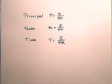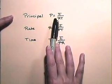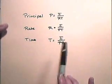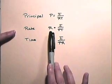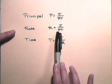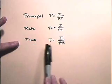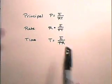Now, let's look at the formulas we will use in this section. Using the basic simple interest formula, we see that the principle, P, equals interest divided by rate times time. We will see that rate, R, equals interest divided by principle times time, and that time, T, equals interest divided by principle times rate.